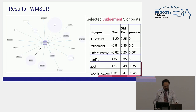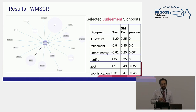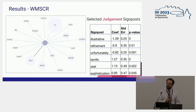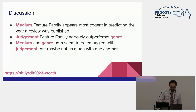My favorite example from judgment signposts starts with the word unfortunately — hard to say unfortunately and mean something positive. But the words feeding into it are yet, indeed, although, apparently, and seldom — all predictors of an earlier date. This may partly explain why judgment terms have higher predictive power than I expected: these are hedge words, and we can almost associate earlier date reviews with a kind of hedgier, more gentlemanly discourse.